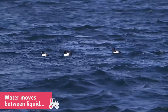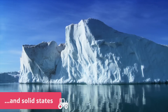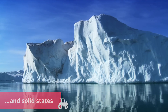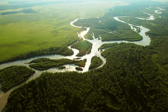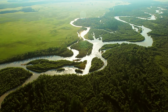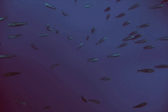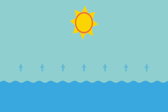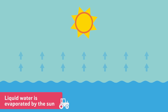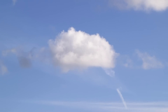Water moves between liquid, gas and solid states in a process we call the water cycle. As a liquid, water forms rivers, lakes, seas and vast oceans. This liquid is evaporated by the sun. As the water warms up from the heat of the sun, it transforms into gas, which is usually known as water vapour.